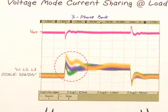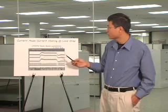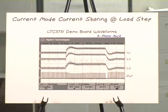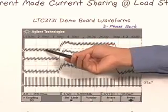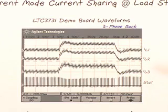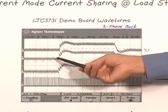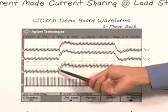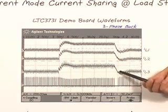Here are the typical waveforms of a current mode control converter at a load-step. This is taken from the LTC3731 three-phase single output buck converter with peak current mode control. The waveforms here are the three-channel inductor current waveforms. Remember, with current mode control, you have fast cycle-by-cycle current sharing. Therefore, you have almost identical waveforms between these three channels. You'll have good current sharing in both DC, load-step-up transients, and load-step-down transients.